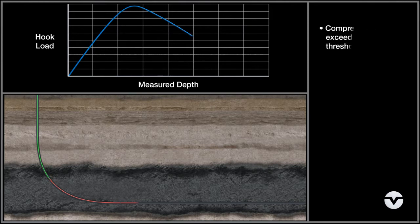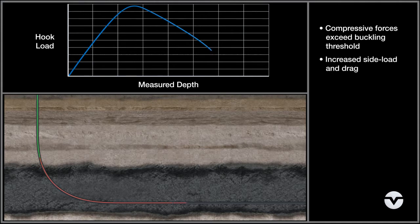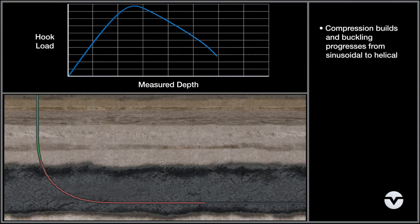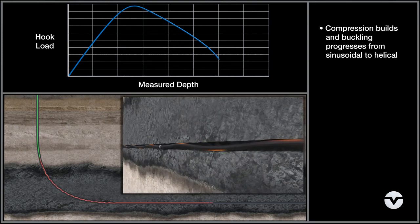Compression forces continue to build as the string enters and reaches further into the horizontal section of the well. When the compression forces exceed the buckling threshold, buckling is initiated. In this case, buckling begins near the start of the build section and results in increased side load and increased drag. As compression builds, the shape of the buckled string transforms from a sinusoidal shape to a helical shape.